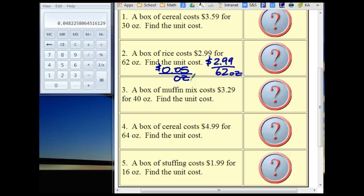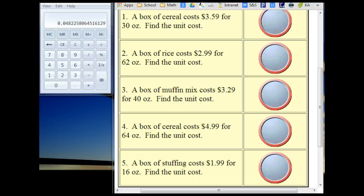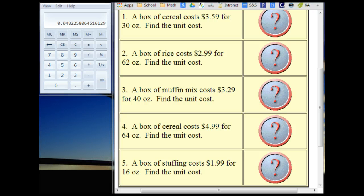We can use that to determine the cost of, you know, if one package comes in 62 ounces and another comes in 80 ounces, then maybe you want to try to buy the one for the least amount per ounce. You can kind of see which one is a better deal. That's kind of where we're going with this whole thing. So looking at number three here, let's see you have a box of muffin mix, it's three dollars and 29 cents.